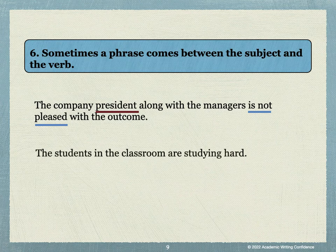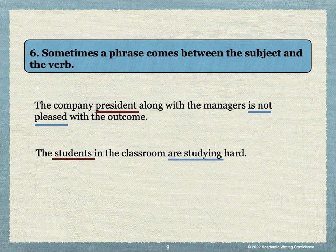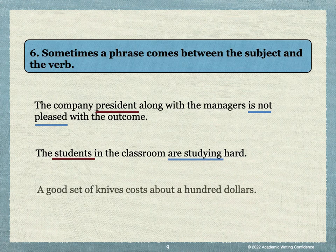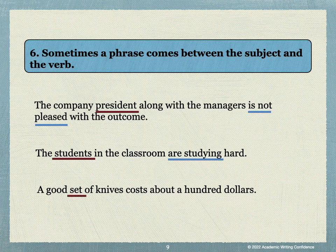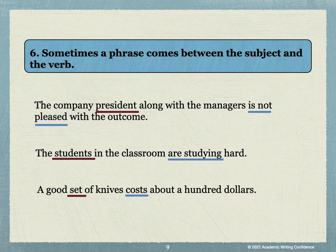Here's another example: The students in the classroom are studying hard. Again, there are some extra words between the subject and the verb, but the subject-verb agreement is students are studying. One more example: A good set of knives costs about $100. Many students might think the subject is knives, but in fact it is the word set. A set of knives — so we need the agreement between set and costs. A set costs, not knives cost.